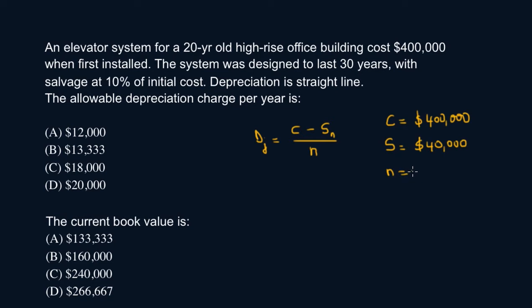I'm sorry, all right. So this is gonna be 30 years because we're told that it was designed to last 30 years, so n is 30. All right, so depreciation for the first question, this is a two-part question by the way, it's gonna be 400,000 minus 40,000 over 30. So 400,000 minus 40,000 divided by 30, that's $12,000.